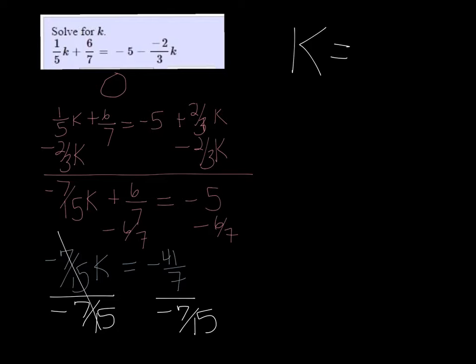And, of course, negative divided by negative is positive. I get that k is 615 over 49.